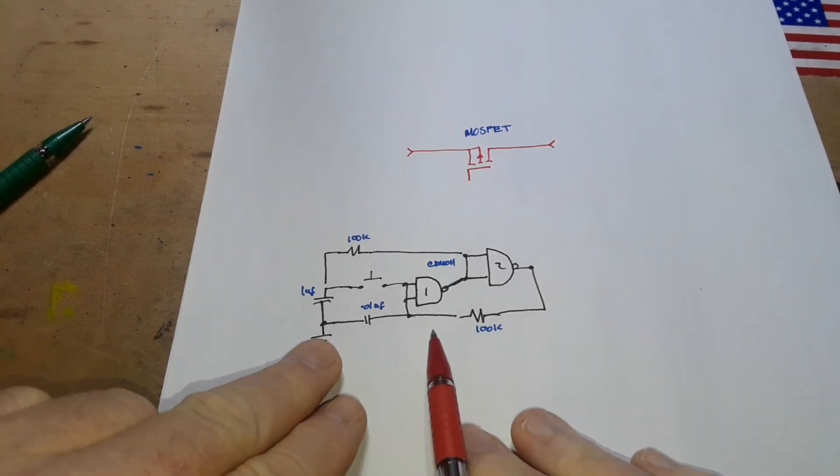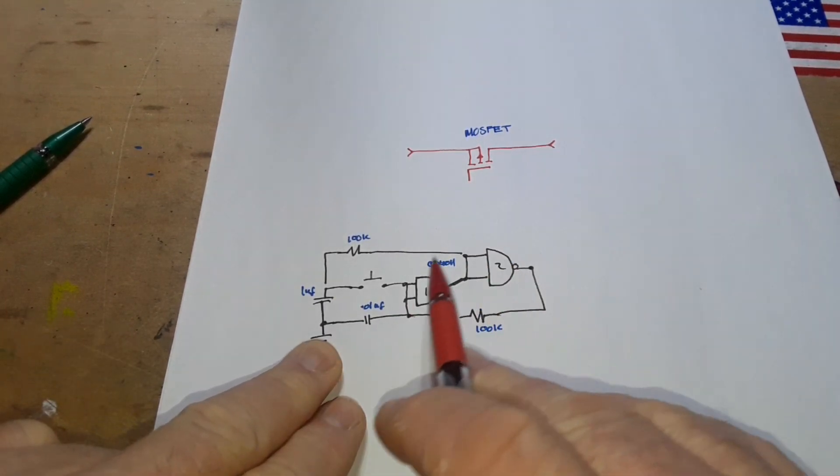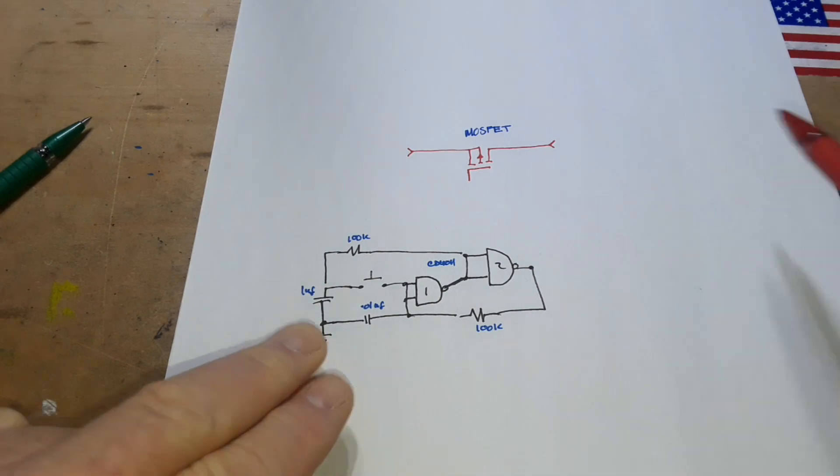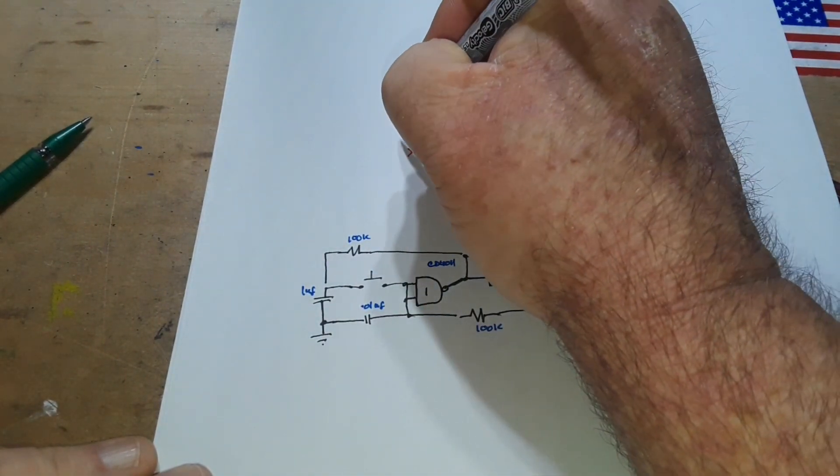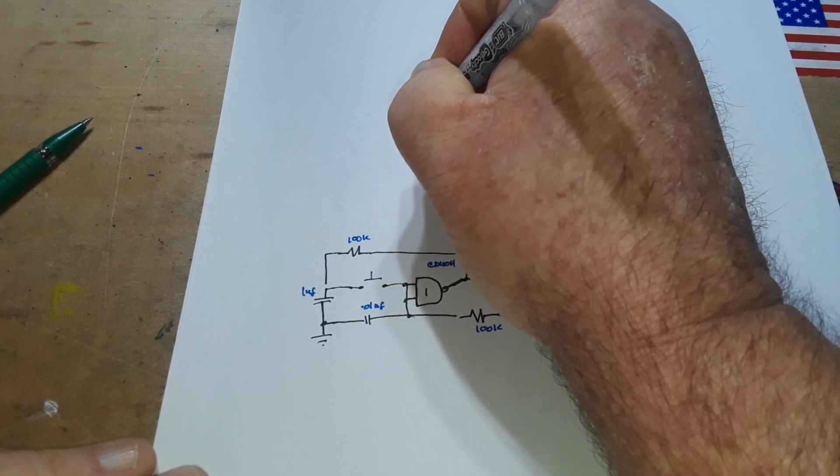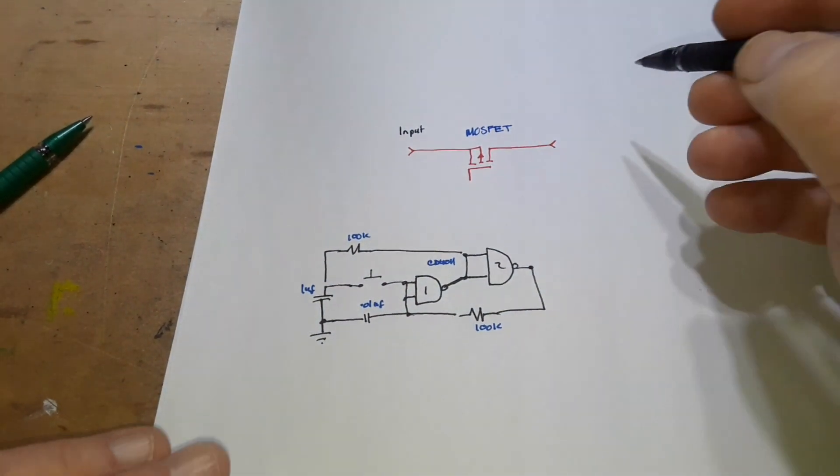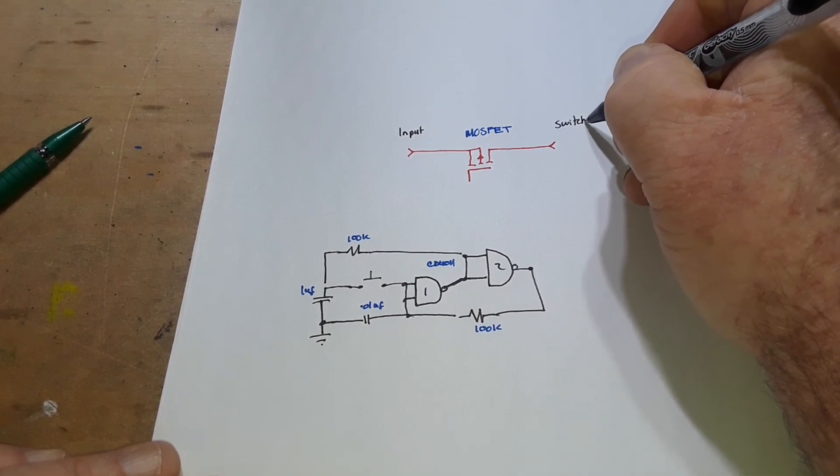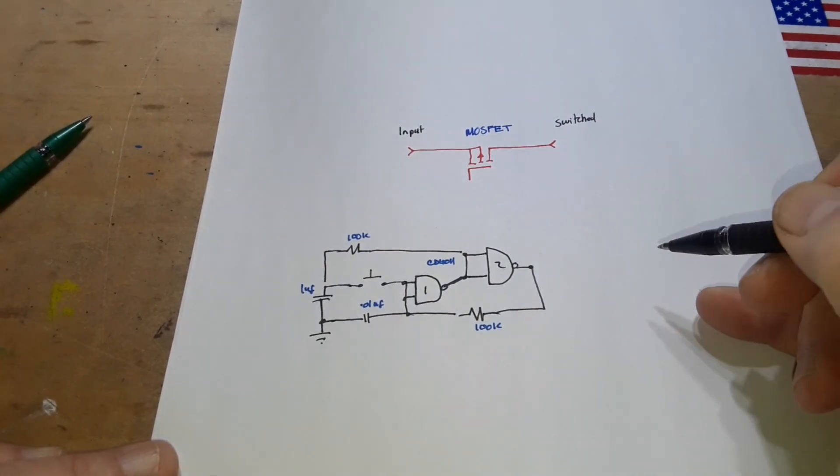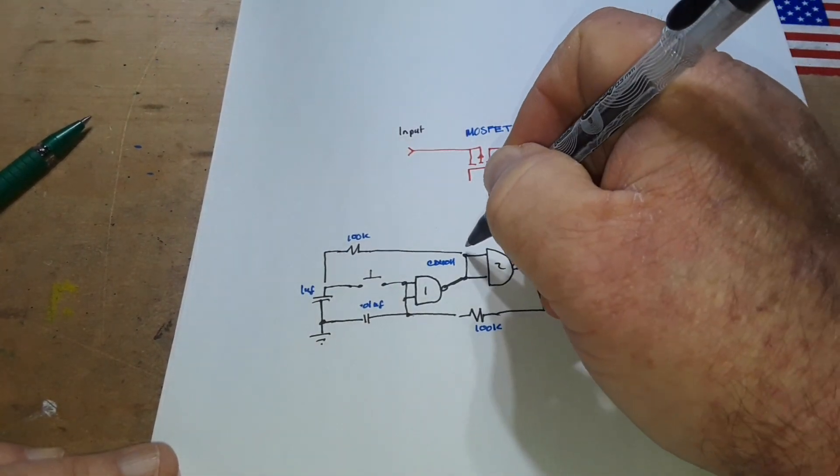Okay so here's our earlier circuit, same as we drew before. And now up here we have a MOSFET. And we could say you know this side is our input power and this side is our switched power. Okay so if we draw...